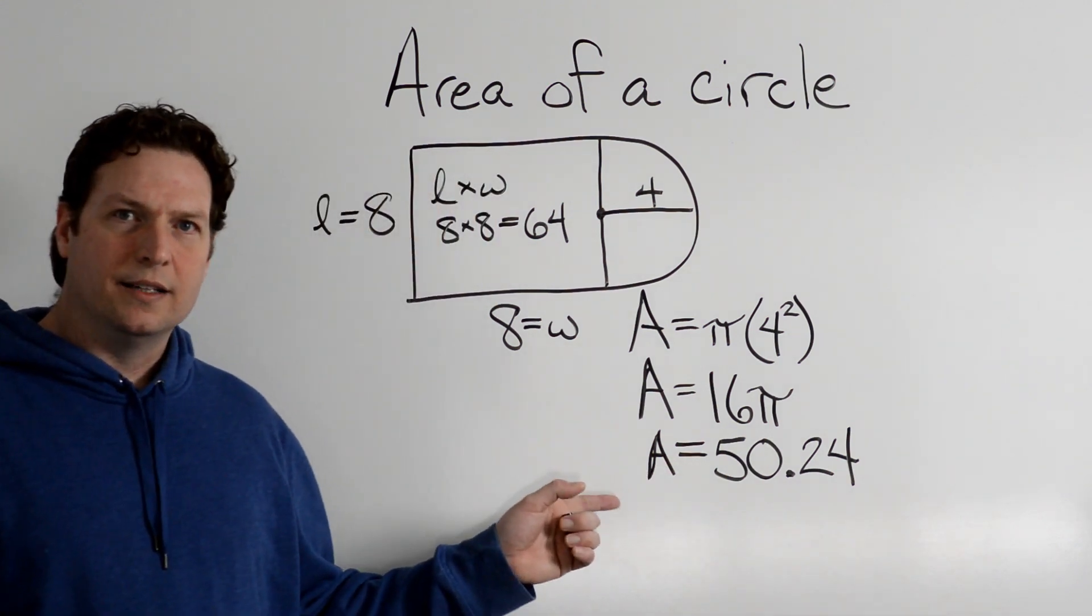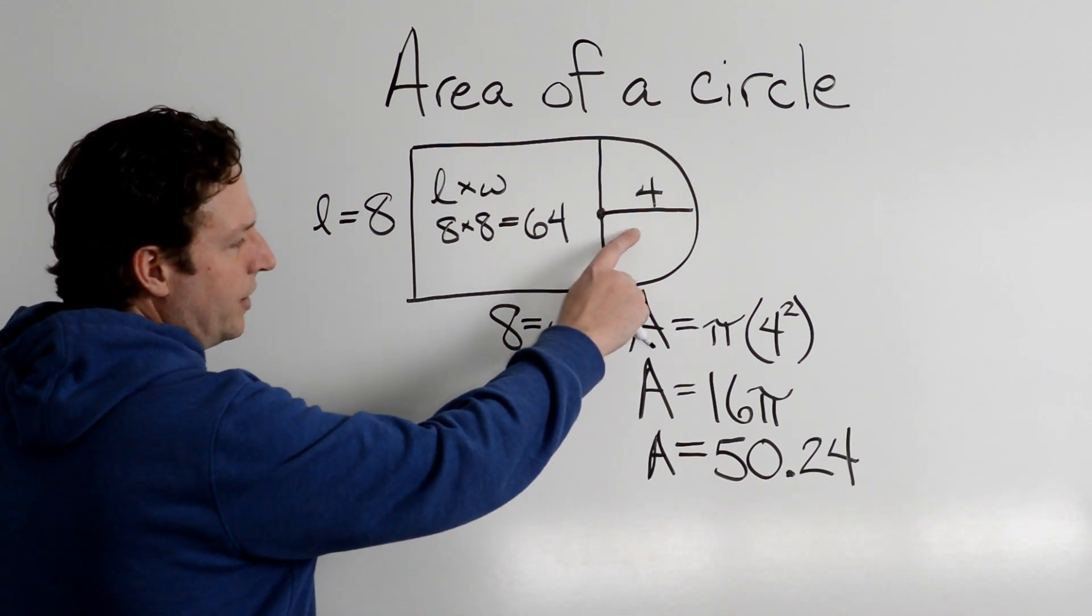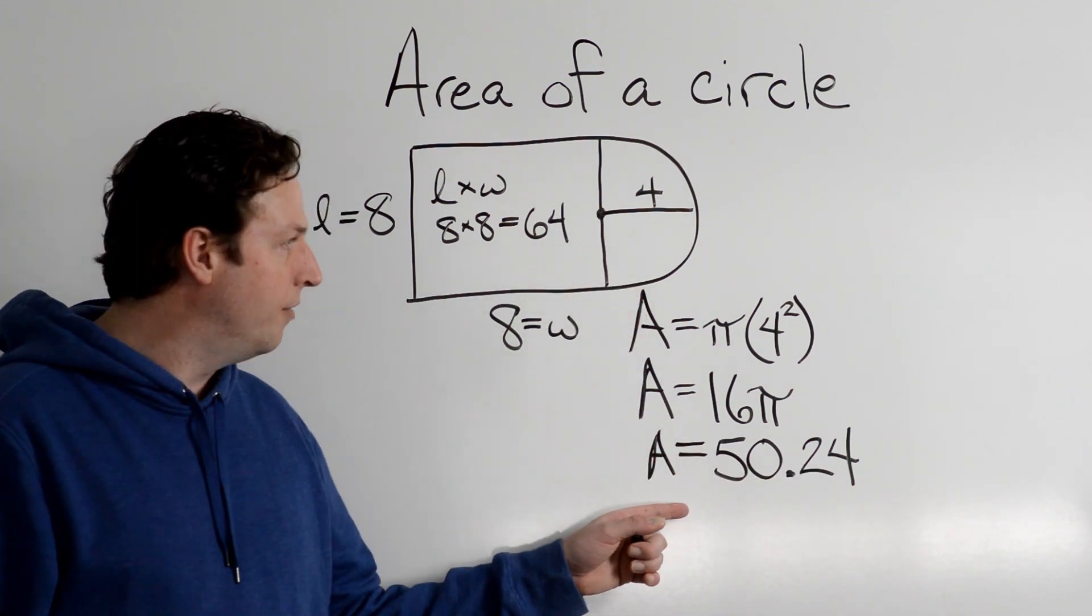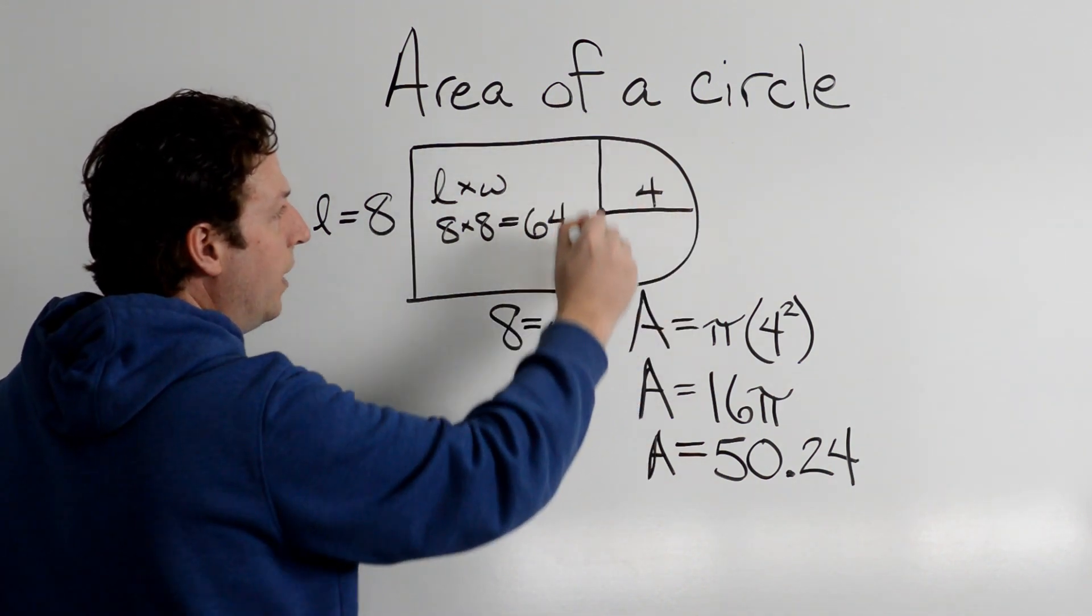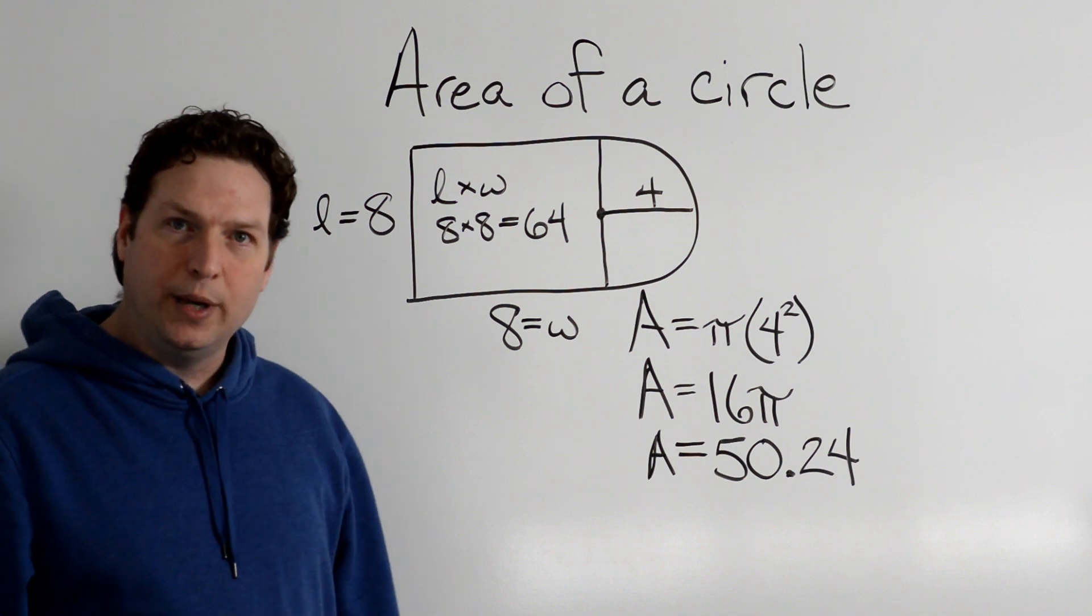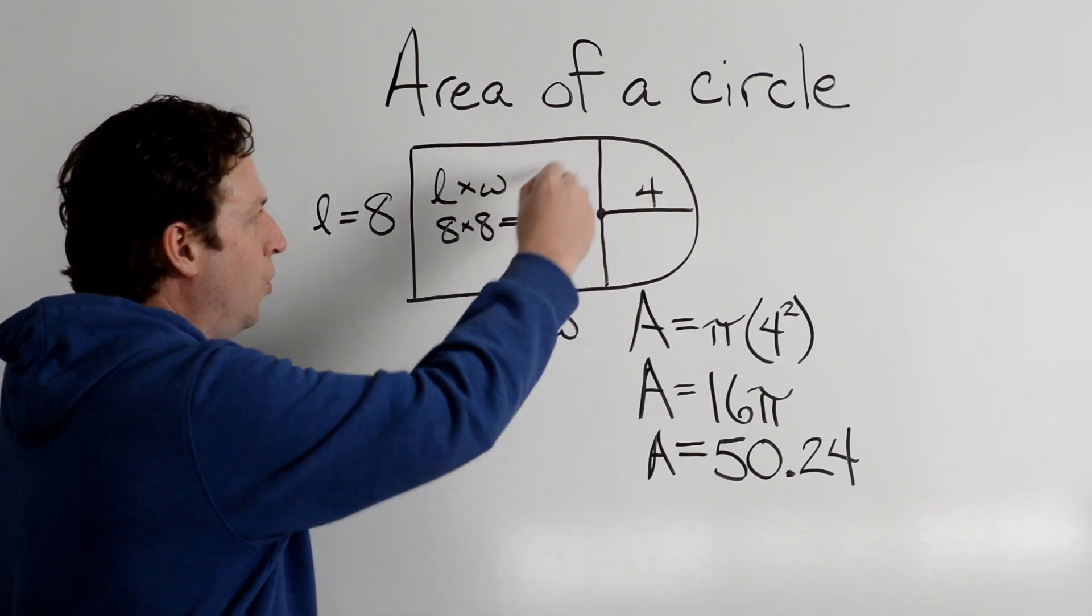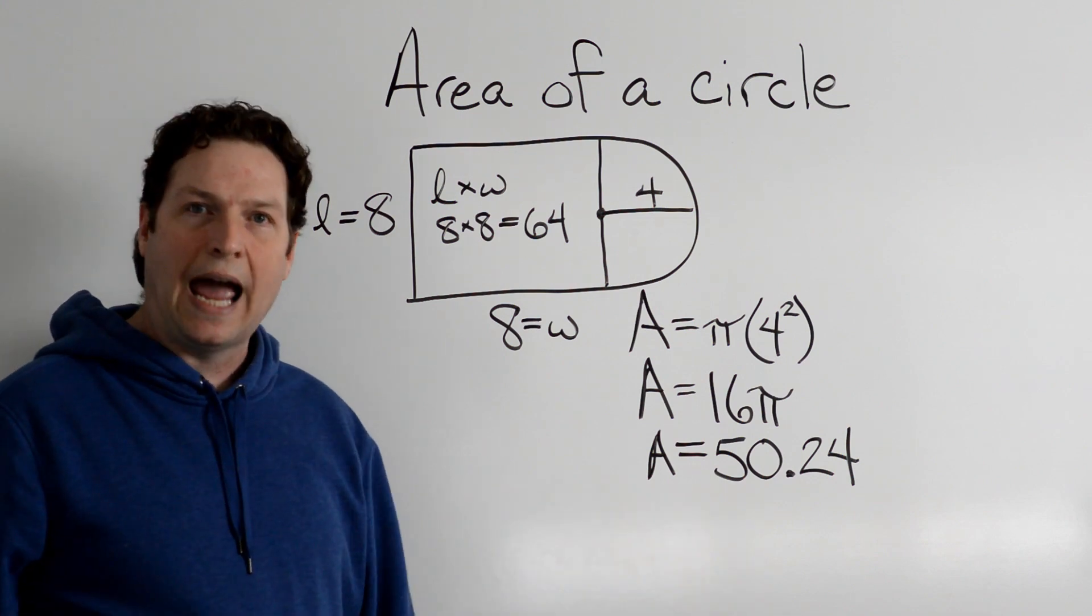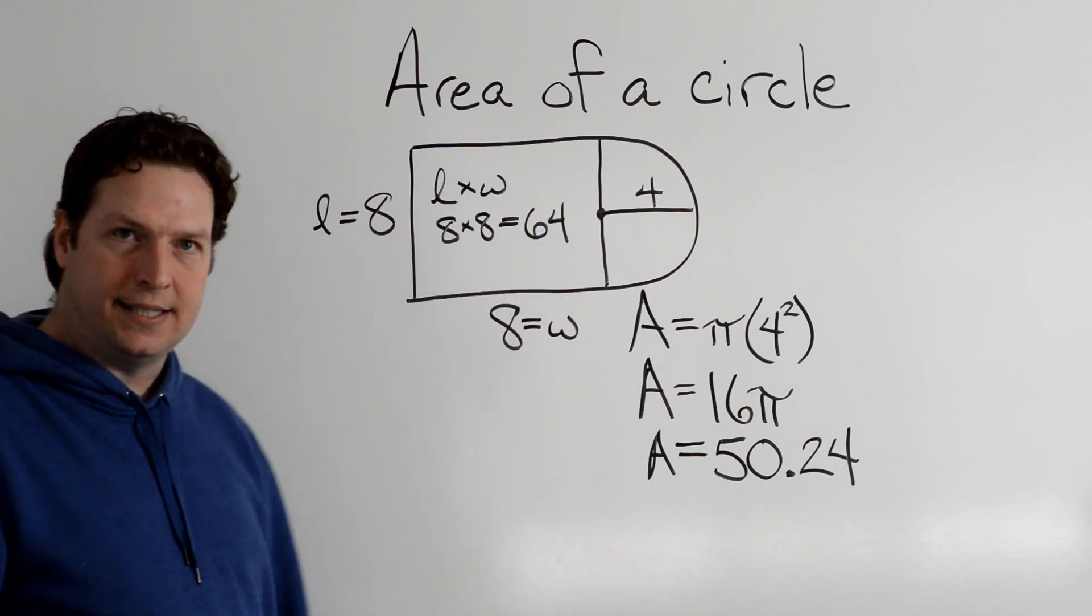But we're not done. This is where we need to use our heads, because this circle is not a full circle. This is the area of a whole circle, but we only need half of it. If we use the entire area, we would be counting this portion twice. So we're going to use half of 50.24 and we're going to add it to 64.